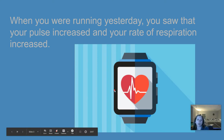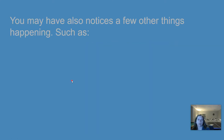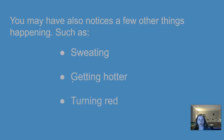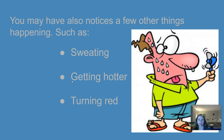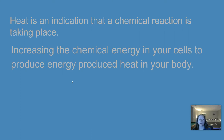Think back to yesterday when you were running — you saw that your pulse increased and your rate of respiration increased, your breathing rate. You may have also noticed a few other things happening such as sweating, getting hotter, and turning red. Heat is an indication that a chemical reaction is taking place. Increasing the chemical energy in your cells to produce energy produced heat in your body.